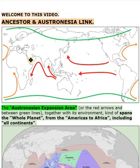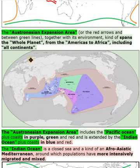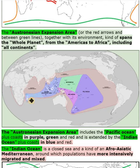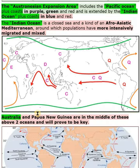The Austronesian Expansion Area includes the Pacific Ocean plus coasts shown in purple, green, and red, and is extended by the Indian Ocean plus coasts in blue and red. The Indian Ocean is a closed sea and a kind of Afroasiatic Mediterranean, around which populations have more intensively migrated and mixed. Australia and Papua New Guinea are in the middle of these two oceans and will prove to be key.